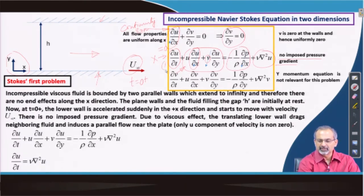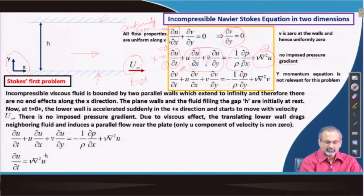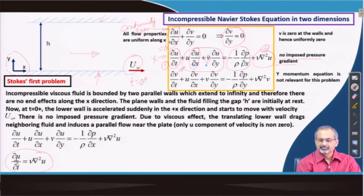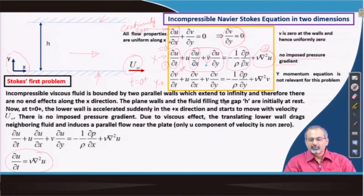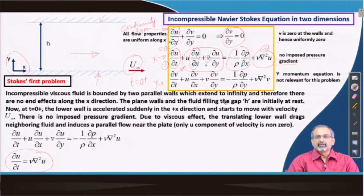We are left with just the time derivative term on the left-hand side and the viscous term on the right-hand side from the momentum equation, which is what appears at the bottom of the slide. The y-momentum equation becomes irrelevant since v has already been found to vanish. Similarly, a z-momentum equation in a three-dimensional extension would also become irrelevant, meaning properties do not change along that direction either.